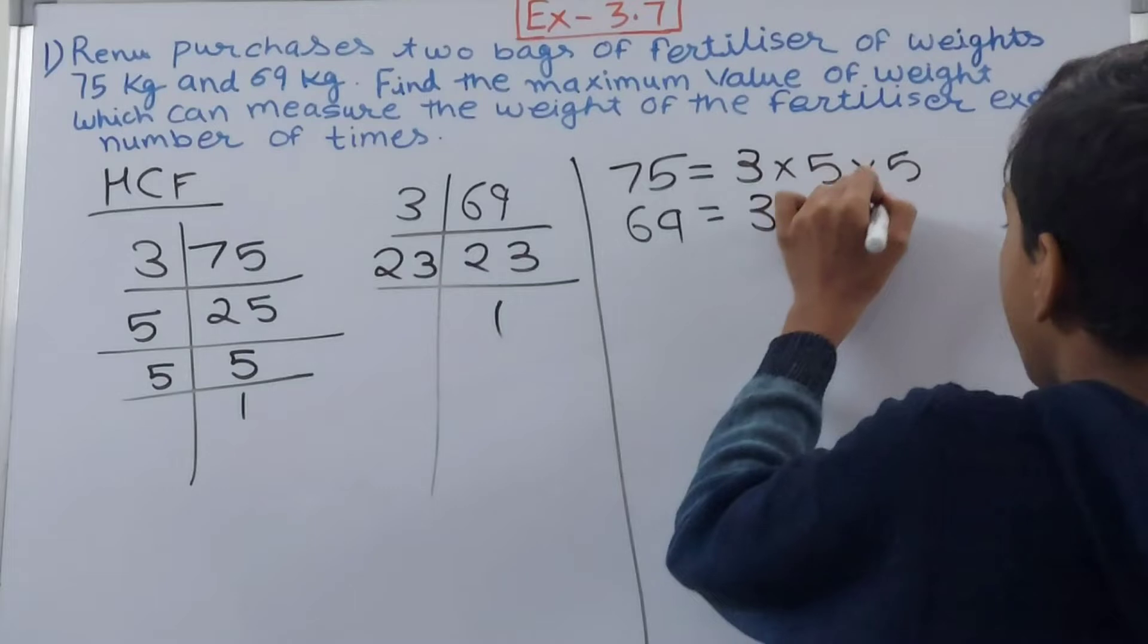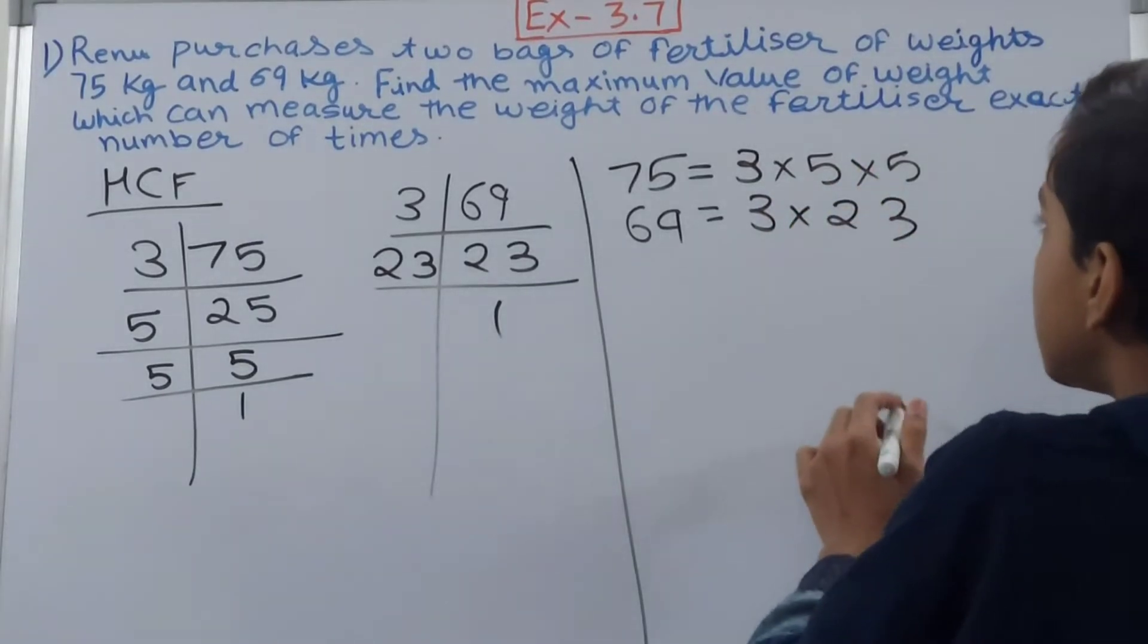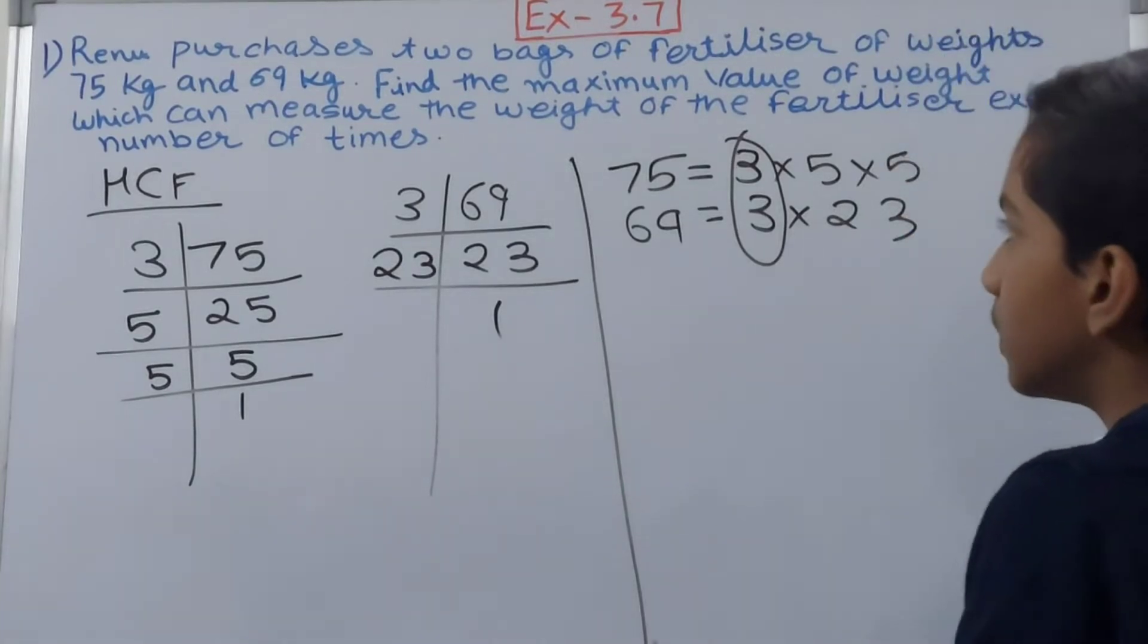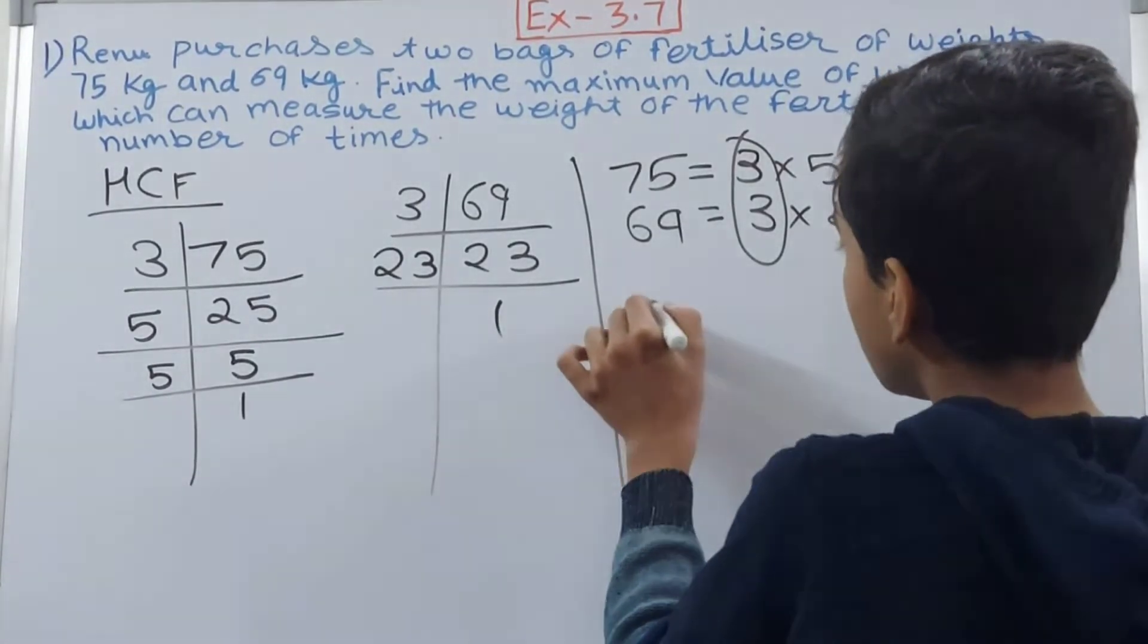Now the common one in this is what? This 3. Anything else is common? No, nothing is common. So our HCF is going to be 3.